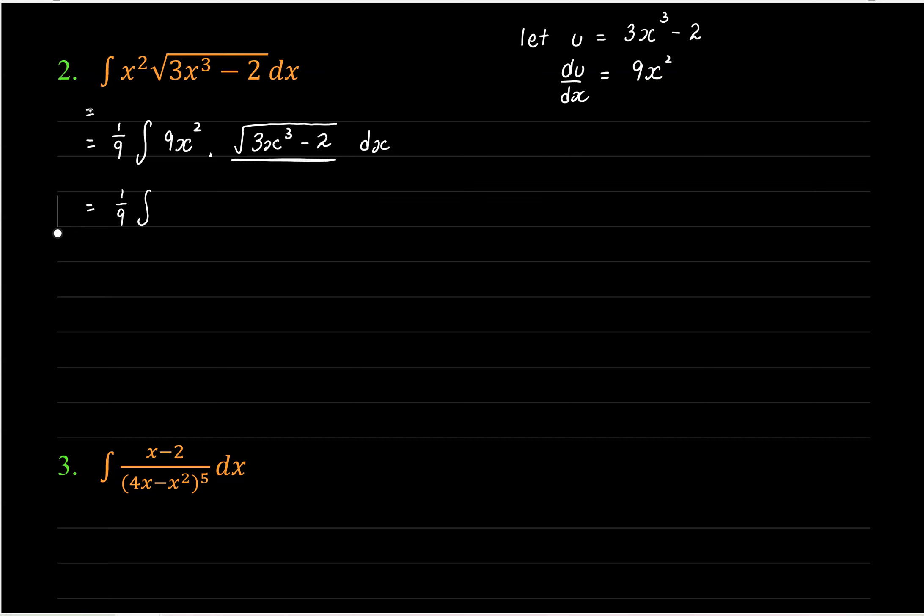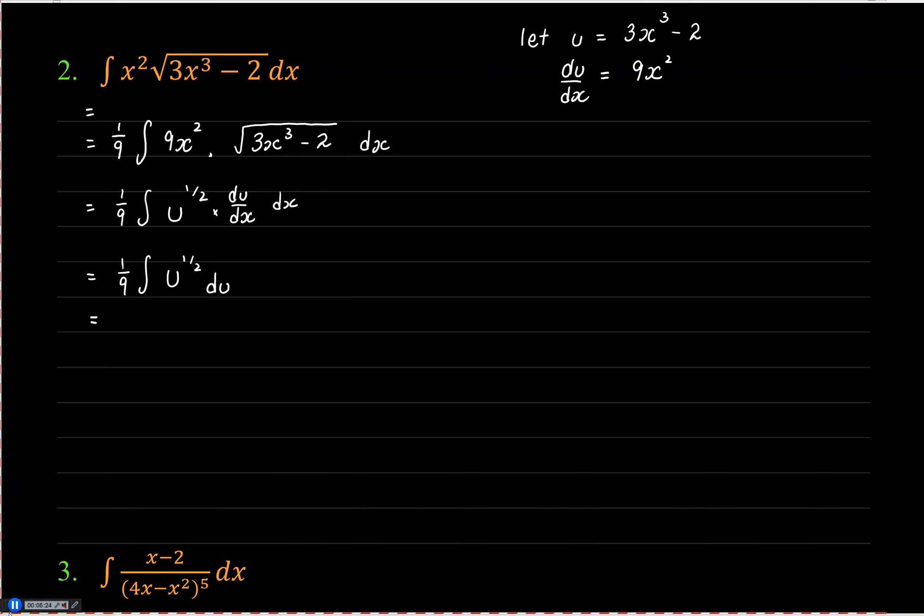So we go, that's 1 ninth. Now, this whole thing here, that's my function u, but what are we doing? We're taking it to the square root, so that's u to the half. And we're multiplying it by 9x squared, which just happens to be du/dx. And then we've got our dx. So what in effect I'm actually doing is I'm integrating 1 ninth u to the half with respect to u. Looks like I'm going to need a little bit more space.